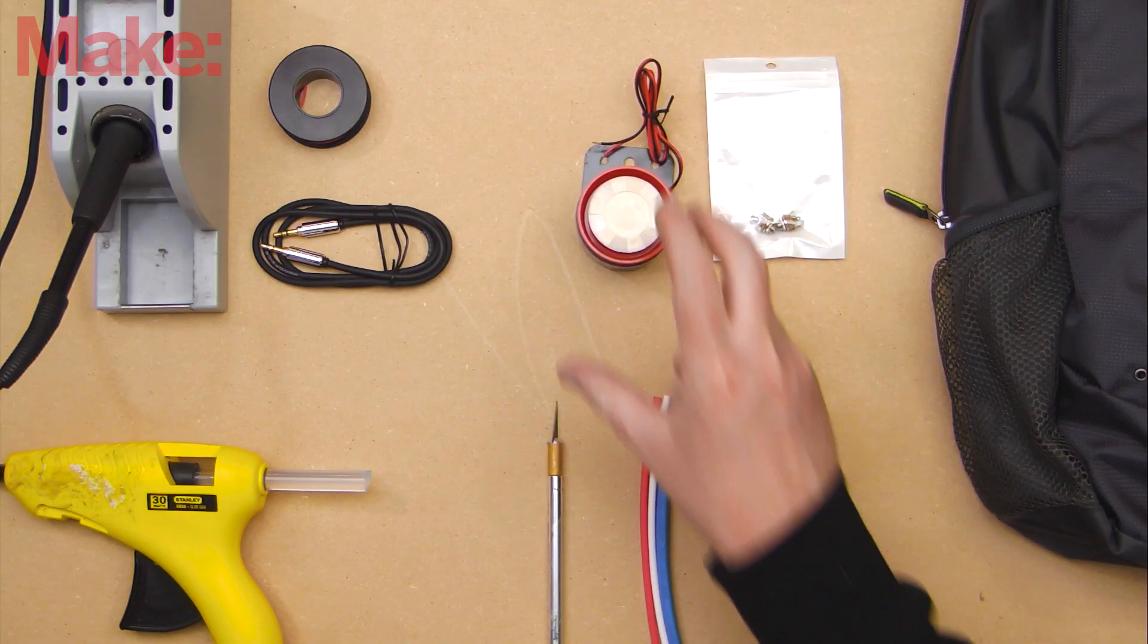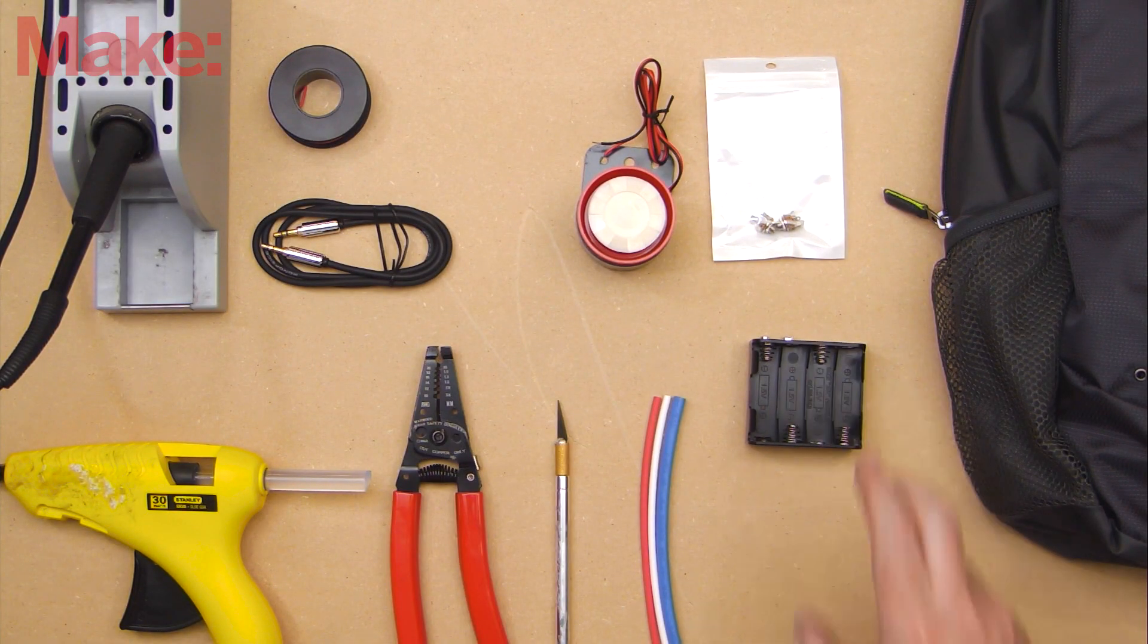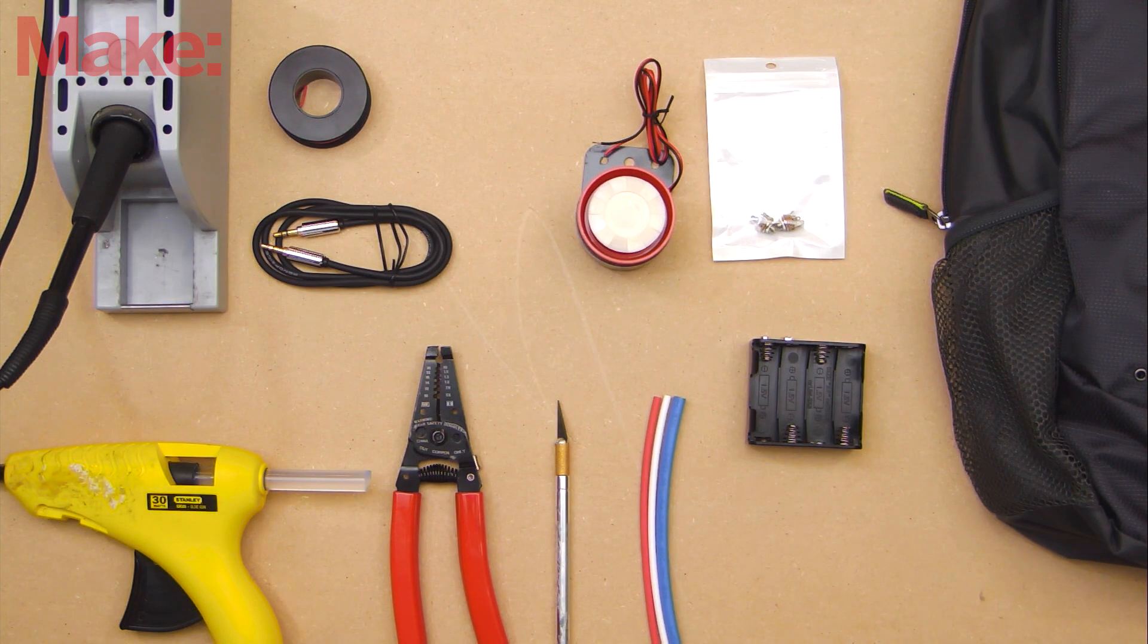There aren't a ton of parts you need to make this build, and the circuit is really simple. Just be sure to have some scrap wood on hand to make the enclosure.